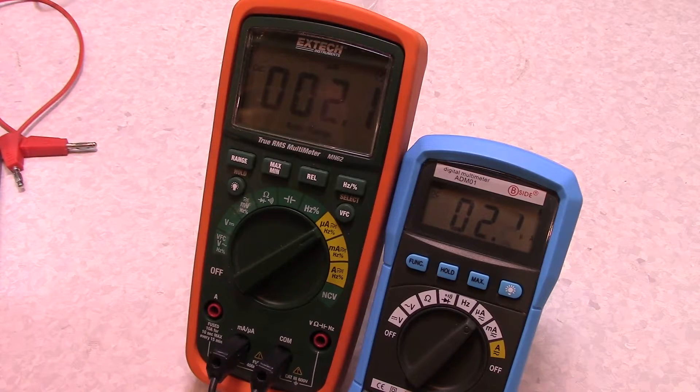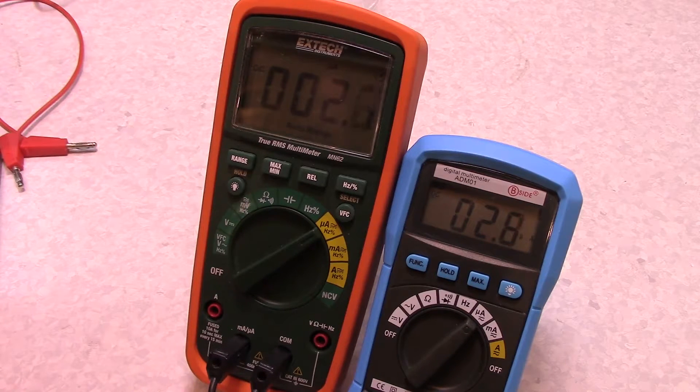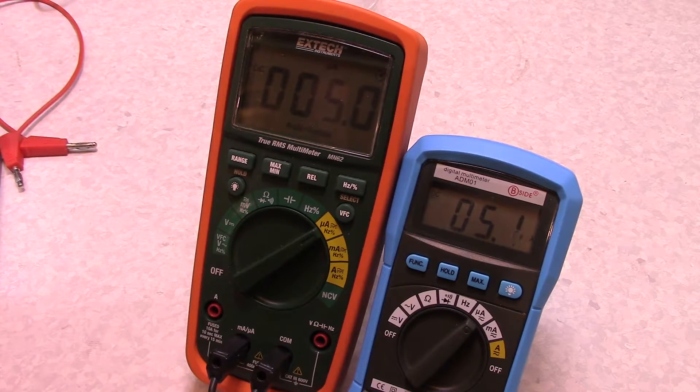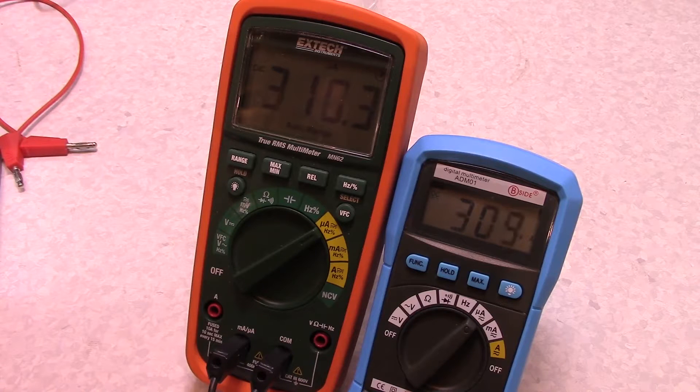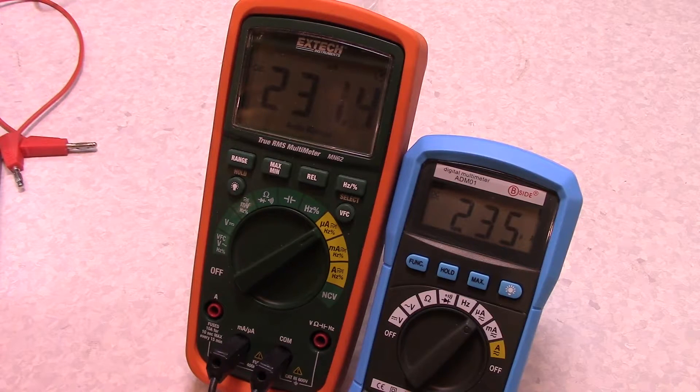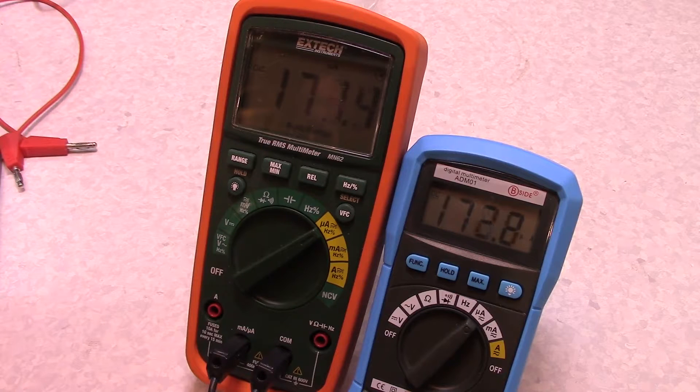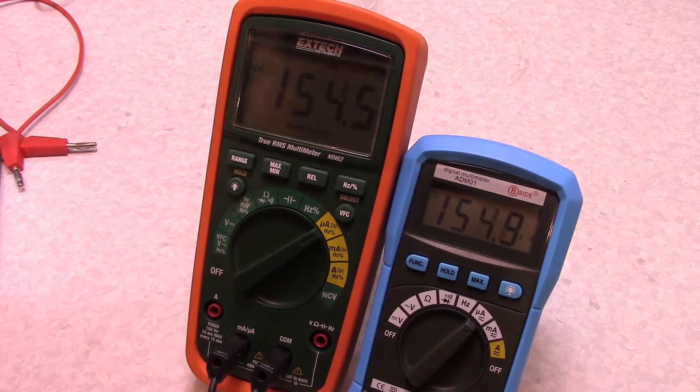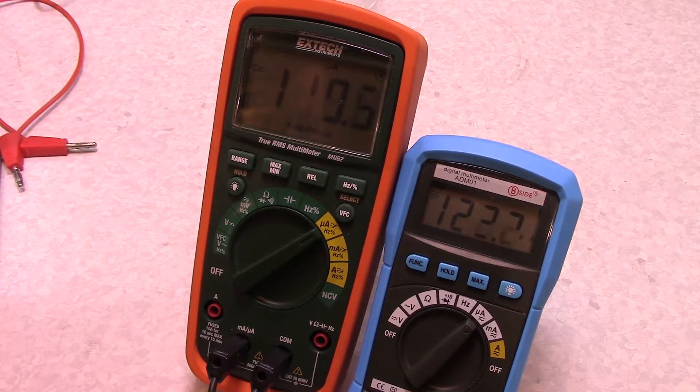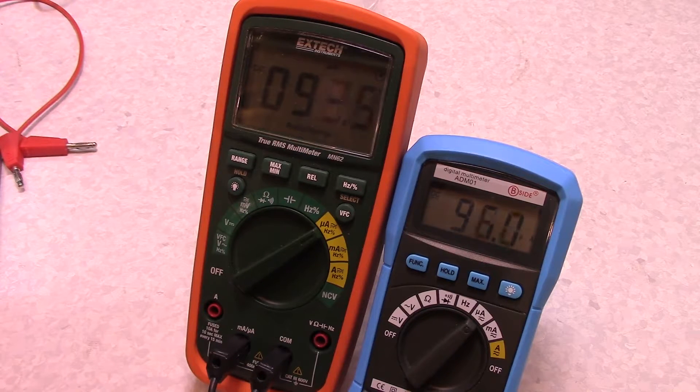All right, so we're on the microamp range now. So, at the low end, they seem like they're pretty close. So, let's start cranking that up a bit. So, unfortunately I'm just using a resistor to generate this. So you can see the heating is causing some issues there, but they look like they're following each other fairly well.